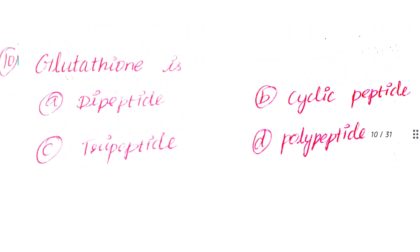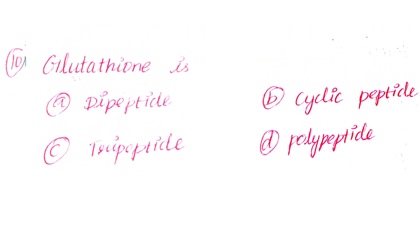Question number 10: Glutathione is. Option A: Dipeptide. Option B: Cyclic peptide. Option C: Tripeptide. Option D: Polypeptide.